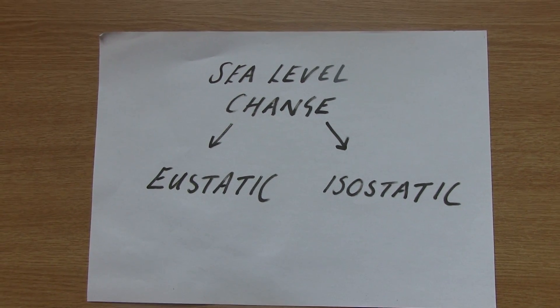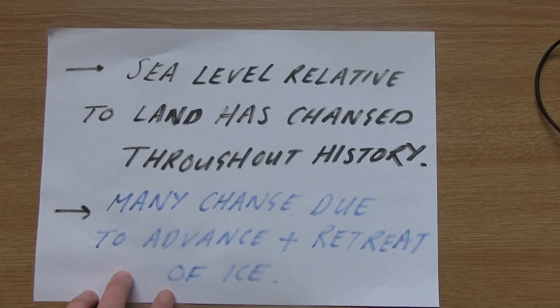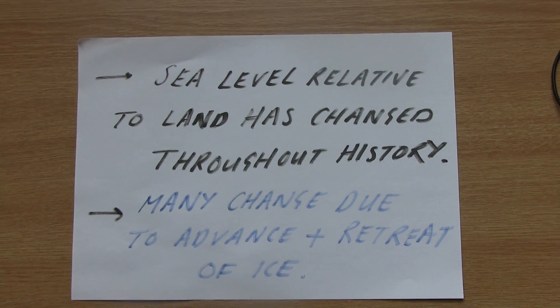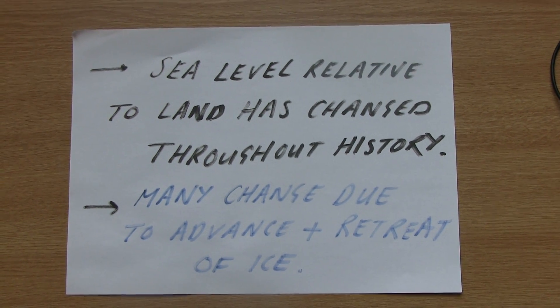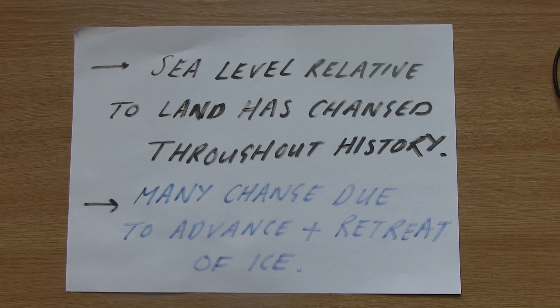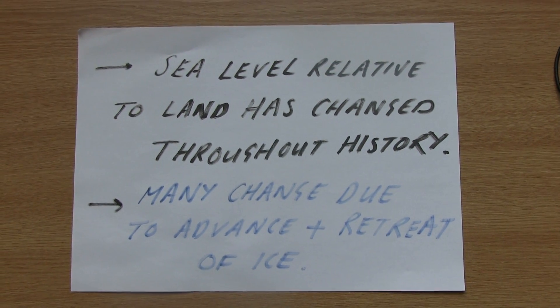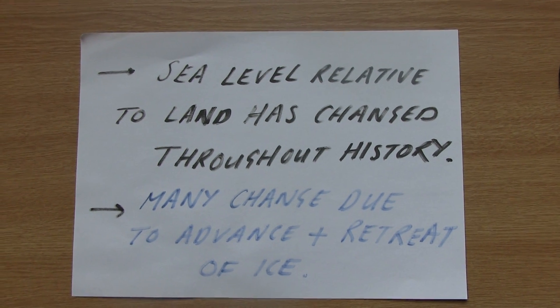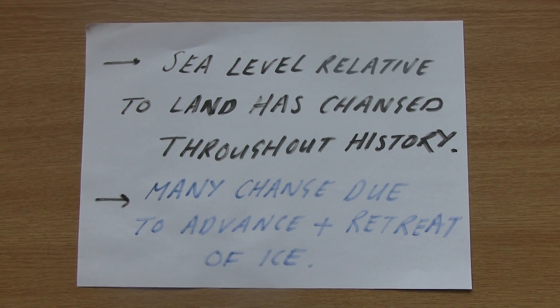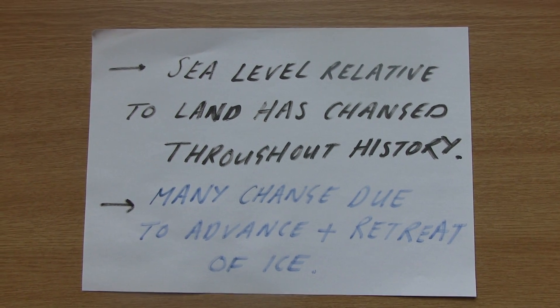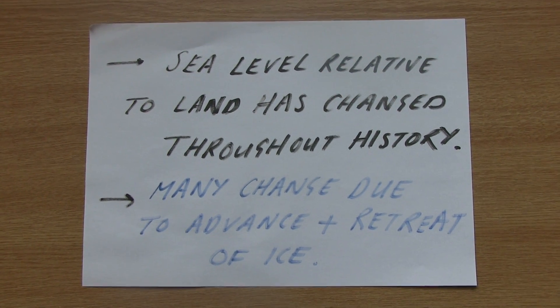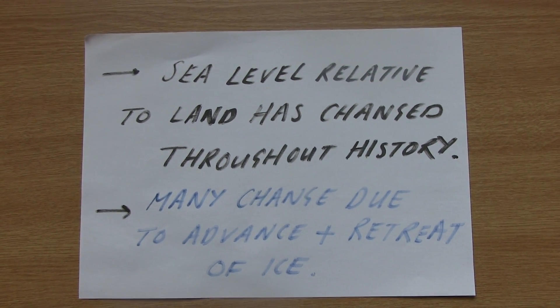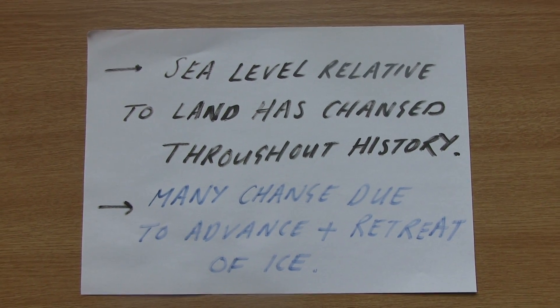Starting point then — let's think about sea level in general. Sea level relative to the land has changed many times throughout history, and is not always at the level it is today. Usually this change is due to the advance and retreat of ice on the land. When we have more ice stored on the land, sea levels are generally lower. In periods of warming like we're in at the moment, ice on the land melts from glaciers, flows into the sea, and sea levels rise as a result of glacial retreat.